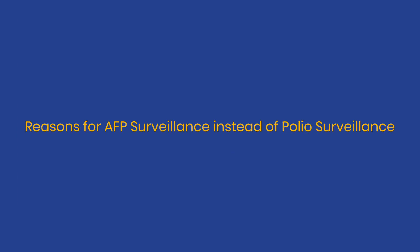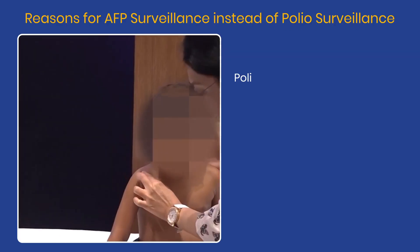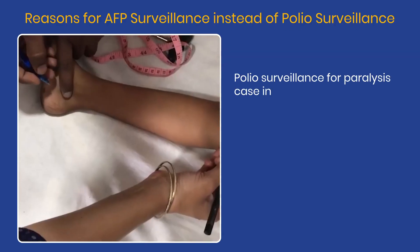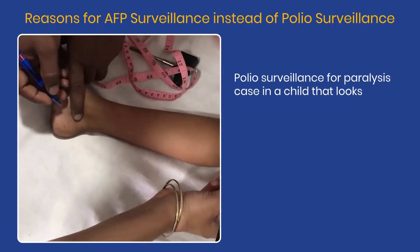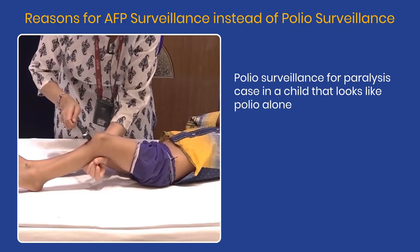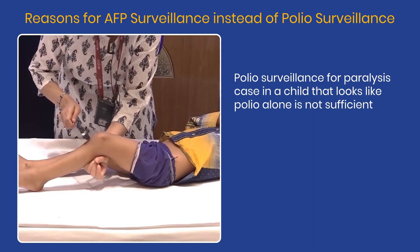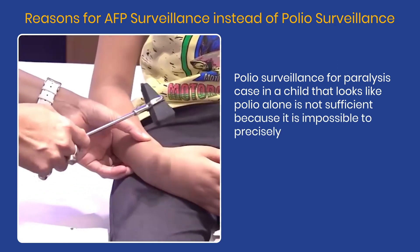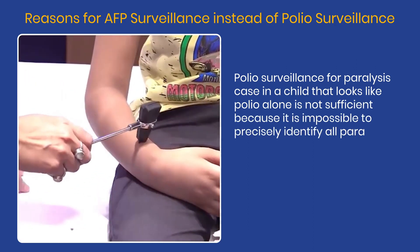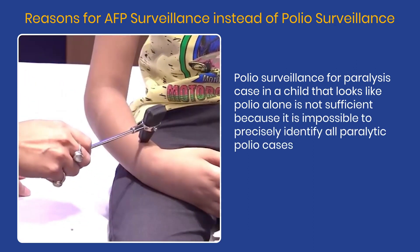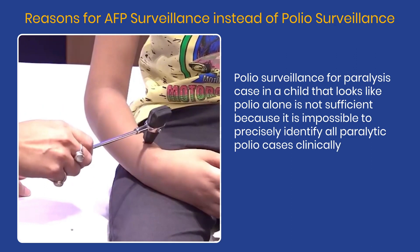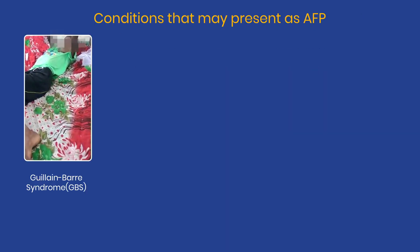Now let us look at the reasons for AFP surveillance instead of polio surveillance. Polio surveillance for paralysis cases in a child that looks like polio alone is not sufficient, because it is impossible to precisely identify all paralytic polio cases clinically.